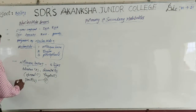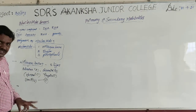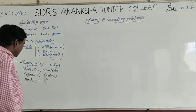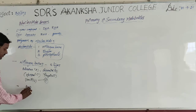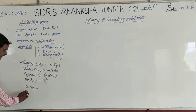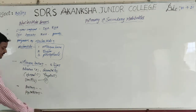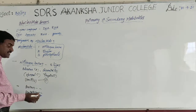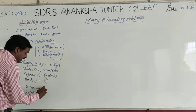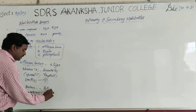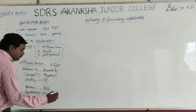Now, coming to the nitrogen bases present in DNA and RNA. These five nitrogen bases are divided into two categories. One category is called Purines. The second category is called Pyrimidines. Adenine and Guanine are called Purines. Cytosine, Thymine, and Uracil are called Pyrimidines.